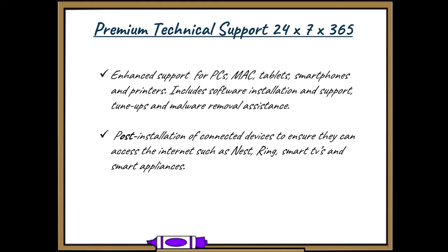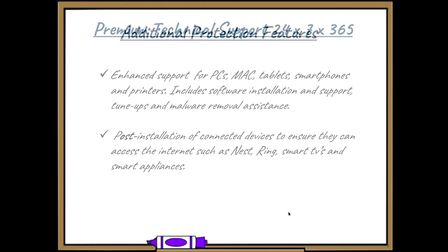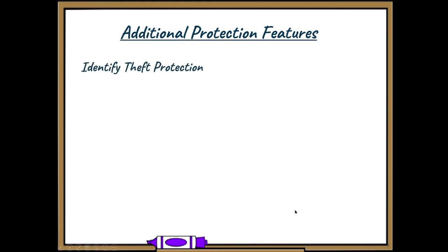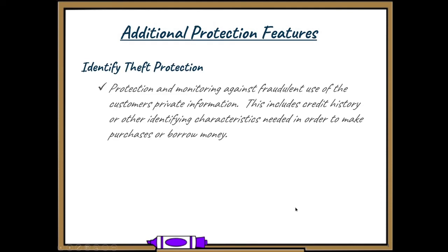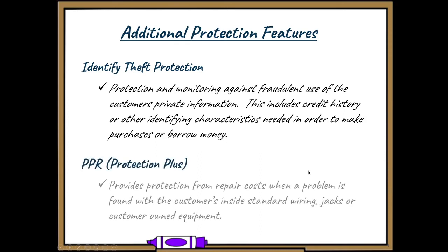We've also got two more pieces: Identity Theft Protection, which will help protect and monitor a customer's identity against fraudulent use. And Protection Plus, or PPR — inside wiring and maintenance. So if something happens to the customer's inside wiring, instead of getting charged, this now protects it.